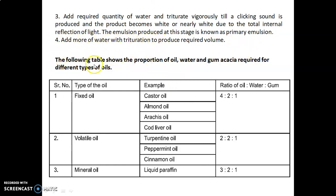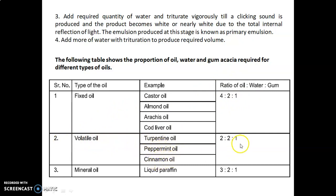Then add more water with trituration to produce the required volume. The following table shows the proportions of oil, water, and gum acacia required for different types of oils: Fixed oils (e.g., castor oil, almond oil, arachis oil, cod liver oil) — ratio 4:2:1. Volatile oils (e.g., turpentine oil, peppermint oil, cinnamon oil) — ratio 2:2:1. Mineral oil (liquid paraffin) — ratio 3:2:1.